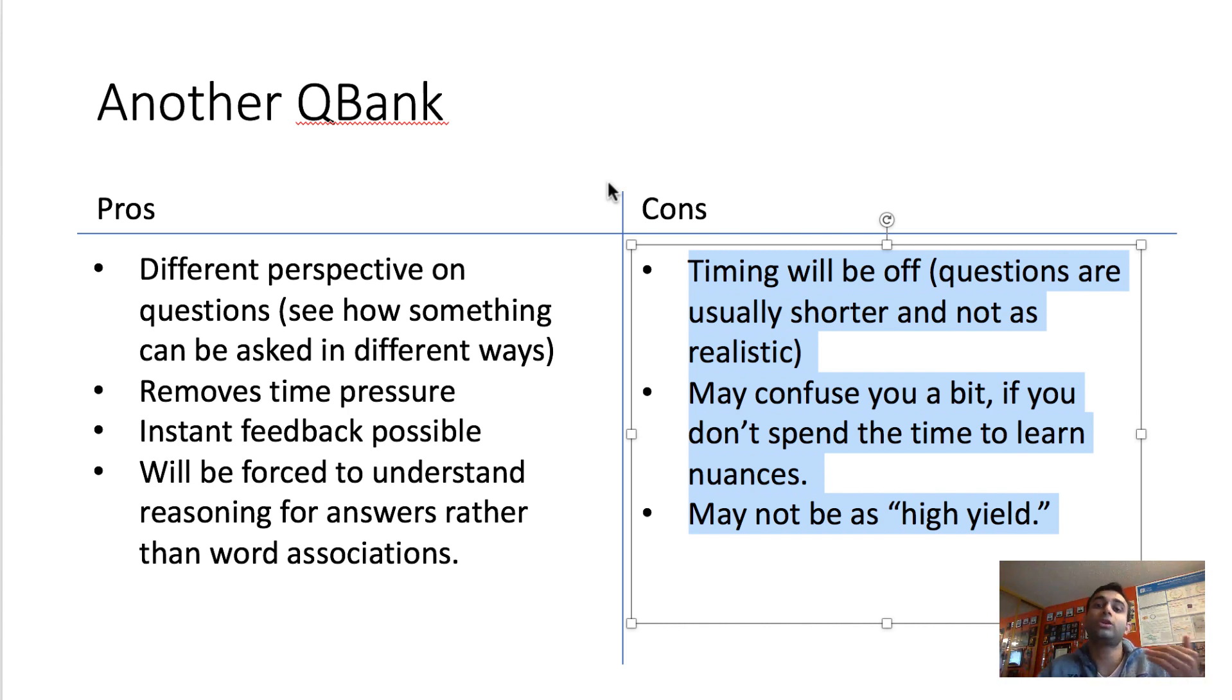And it just tended to be that whenever I did Kaplan or Amboss questions, I would just not be as crunched for time. So you should not do another QBank in hopes that it'll help solidify your testing time-taking strategy. The time-taking strategy should be done purely through UWorld because I think that's a really good method.